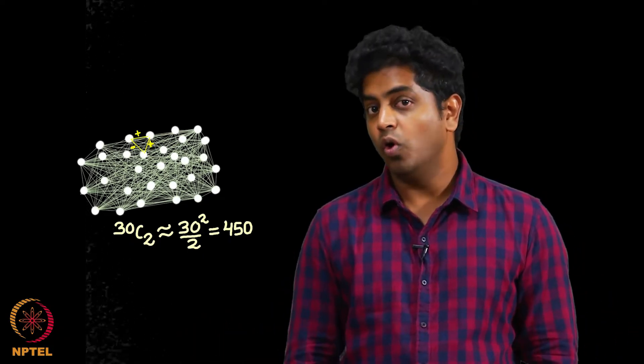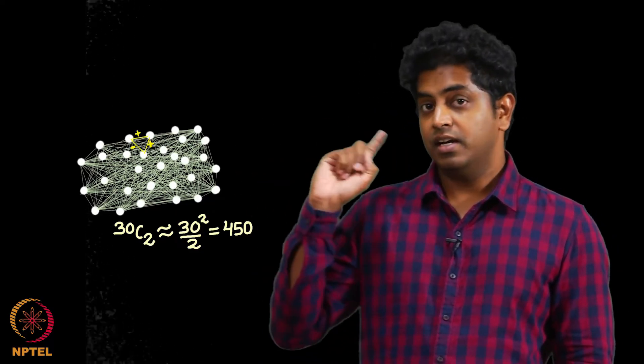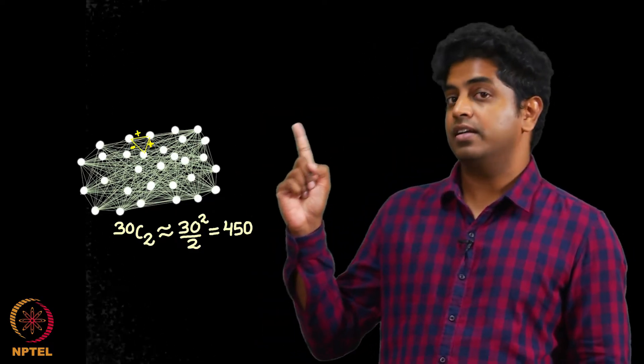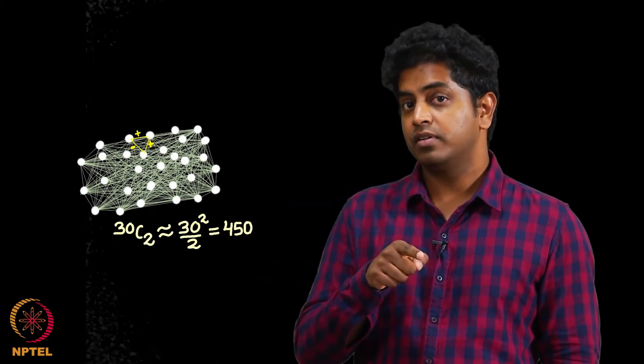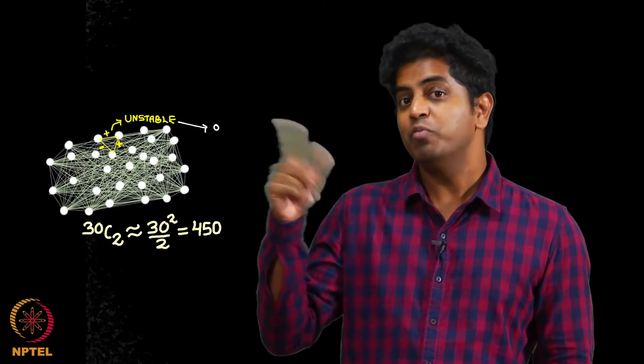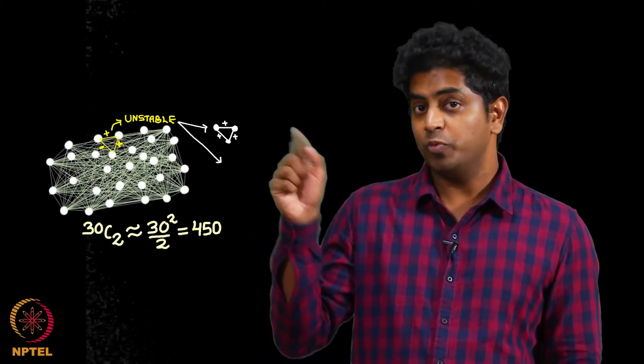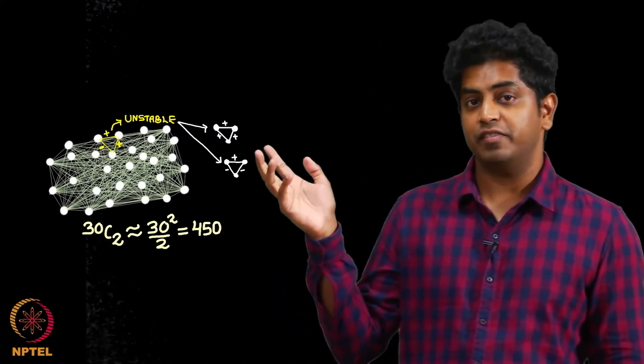We also know the four cases. If there is a triangle here with a positive, positive, negative, it is unstable. It will move towards positive, positive, positive or positive, negative, negative. We have discussed this enough.